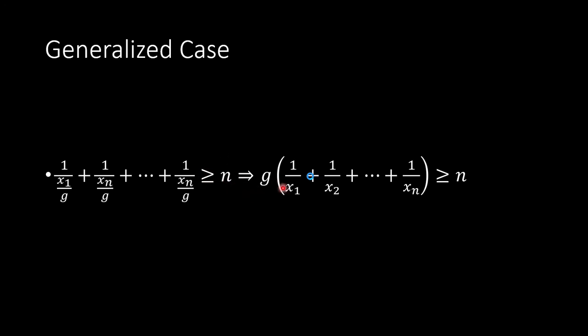Then you do some algebraic operations. g times 1 over x1 plus 1 over x2 all the way to 1 over xn must be larger than or equal to n.